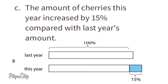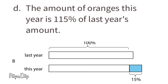Diagram B matches Situation C: the amount of cherries this year increased by 15 percent compared with last year's amount. Last year's amount is represented as 100 percent, and this year's amount is 100 percent plus 15 percent, equaling 115 percent of last year's amount. Diagram B also matches Situation D: the amount of oranges this year is 115 percent of last year's amount, shown by the same base rectangle with an additional 15 percent blue rectangle added on.